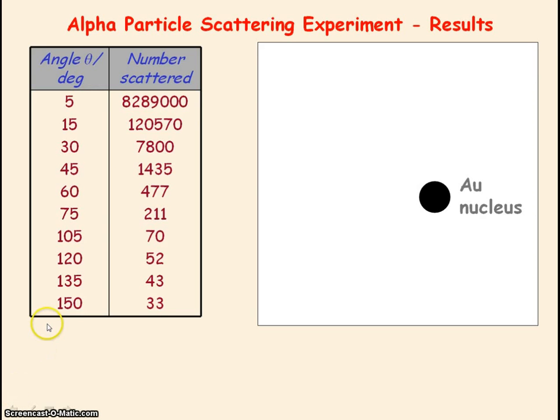Here, this table of results is showing you a modern set of results of the number of alpha particles that were scattered at different angles. The table shows that most of the alpha particles passed straight through the gold foil.